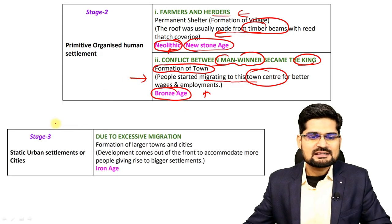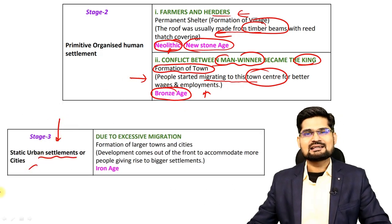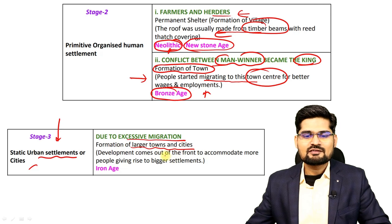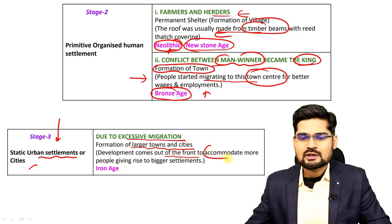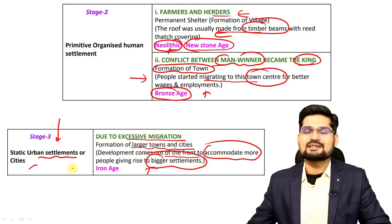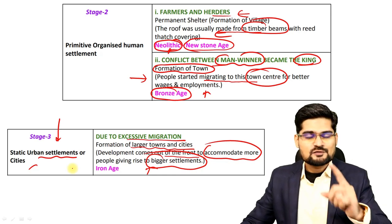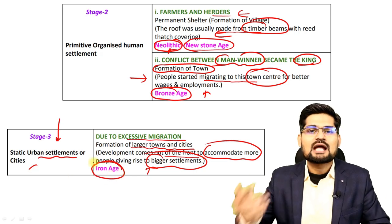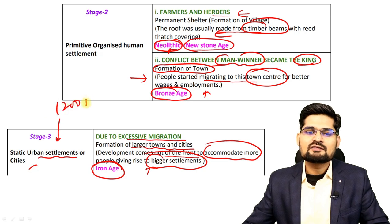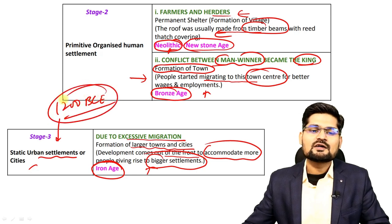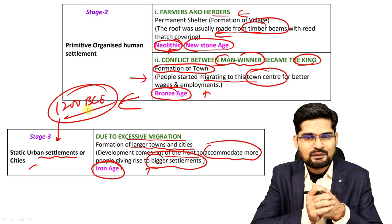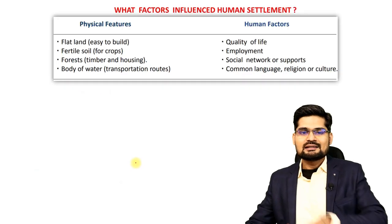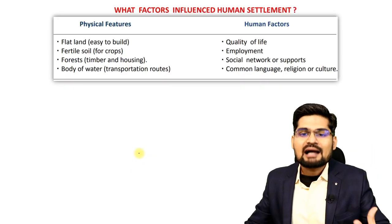People started migrating to town centers for better wages and employment during the Bronze Age. The third stage brings static urban settlements and cities: excessive migration leads to formation of large towns accommodating more people, giving rise to bigger settlements. Primate cities begin to develop. Around 1200 BCE, all Bronze Age civilizations collapse and the Iron Age civilizations begin to take over.